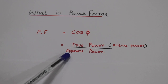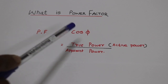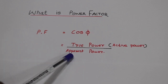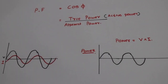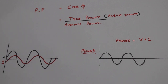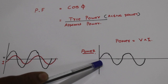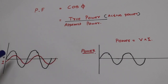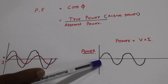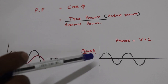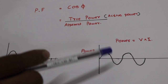We have a waveform — a sine wave and a cosine wave. We have true power and apparent power represented in the waveform. The current waveform is shown in green color, and the voltage waveform is in red color. Power is also represented as a waveform.